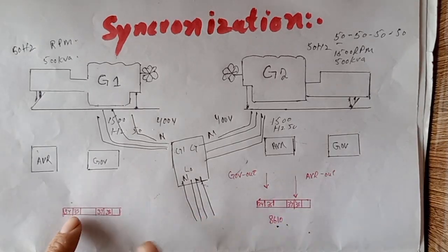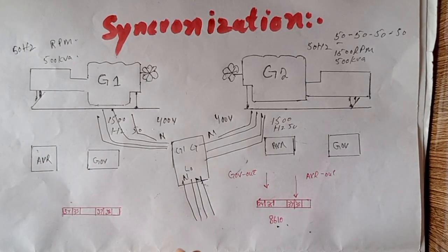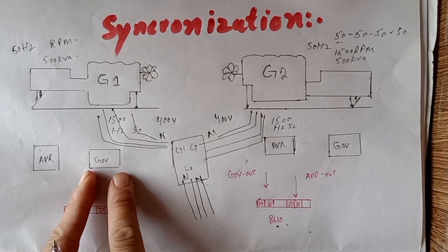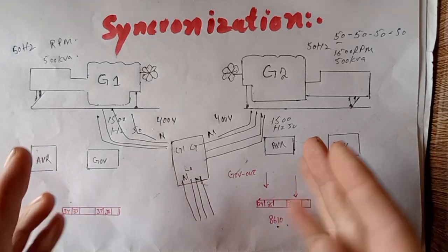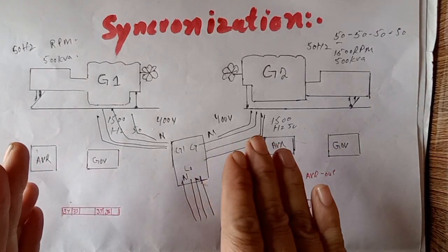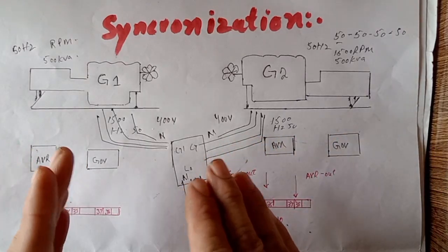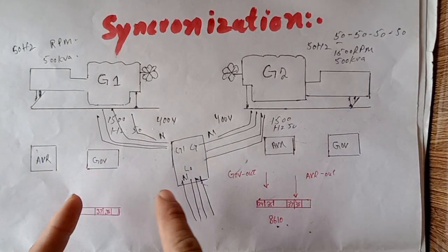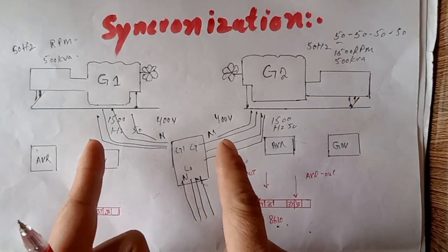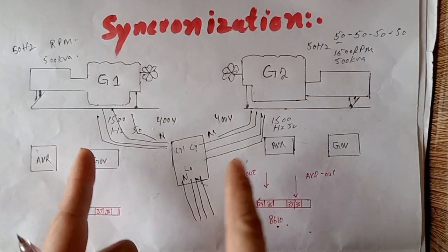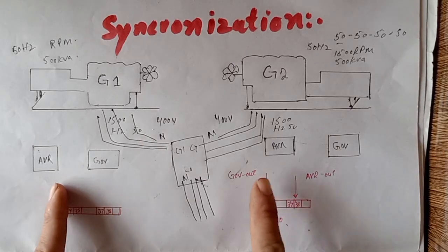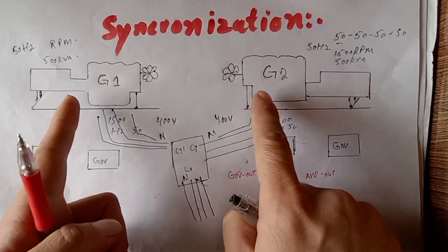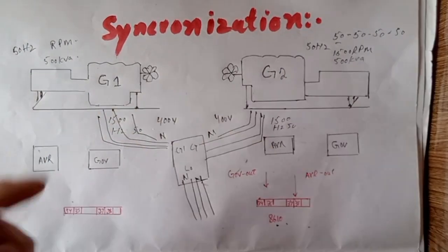A very important thing in synchronization: we need to also synchronize the generator AVR and the generator governor. Without load, the generator runs at the same rating and RPM, but when we put a load on the generator, the frequency and voltage also change. To stabilize the voltage and speed of both generators, we need the DFC controller to control all generator synchronization under load.